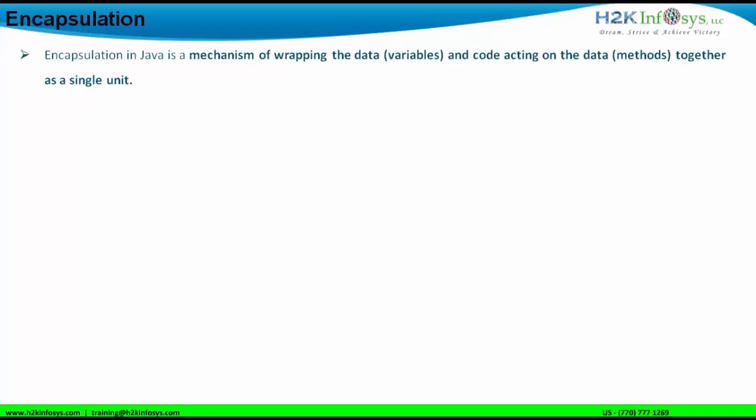First of all, what is encapsulation as far as Java language is concerned? It's a mechanism of wrapping up the data — data is nothing but variables which are declared with data — and the code acting on the data, meaning methods which act on the data defined in the variables. Wrapping these two things together is called encapsulation.